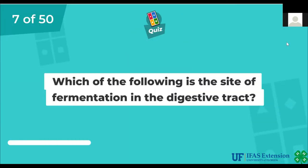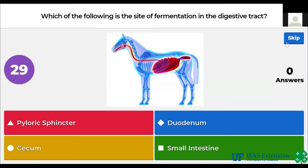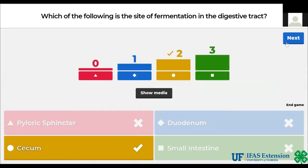Which of the following is the site of fermentation in the digestive tract? Pyloric sphincter, duodenum, cecum, small intestine. The answer is cecum.